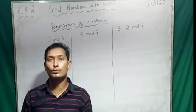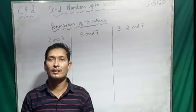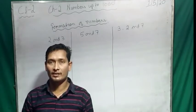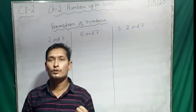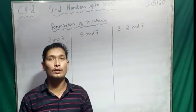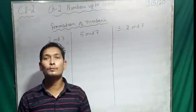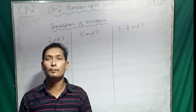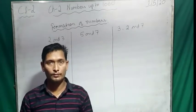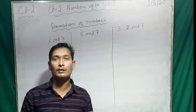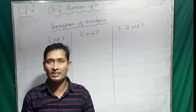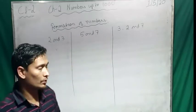We can form two types of numbers — one is smallest and another one is greatest. We have learned in class 1 also how to make numbers, how to form numbers if the digits are given, with repeated and without repeated digits. And today we will learn how to form the same but with 3 digits. So let's start.